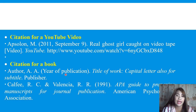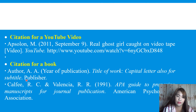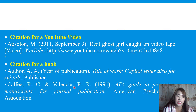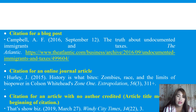For a book citation: include the author's name, the year of publication, the name of the work, and the publisher. For example: Calfei R.C. and Valentia R.R. (1991). APA guide to preparing manuscripts for journal publications. American Psychological Association.